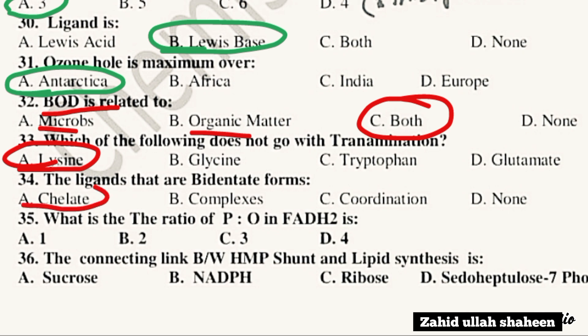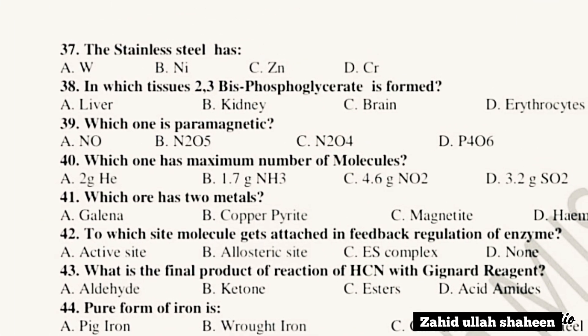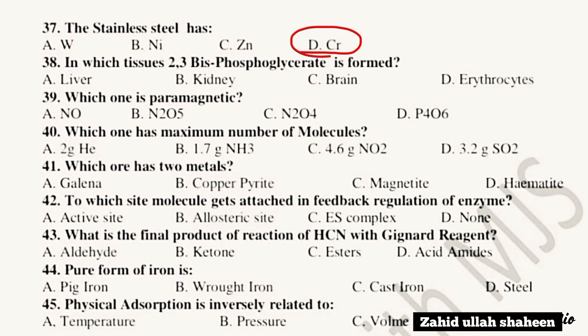Question 35: What is the ratio of PQ to FADH2? Question 36: The connecting link between HMP pathway and lipid synthesis is NADPH — take option.